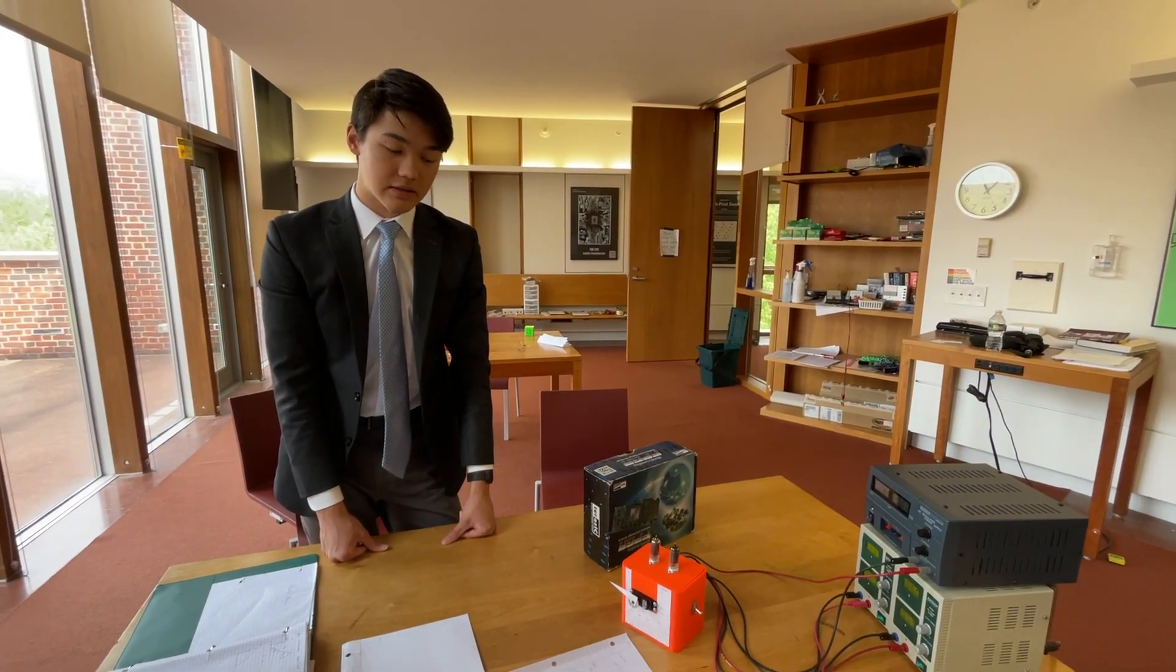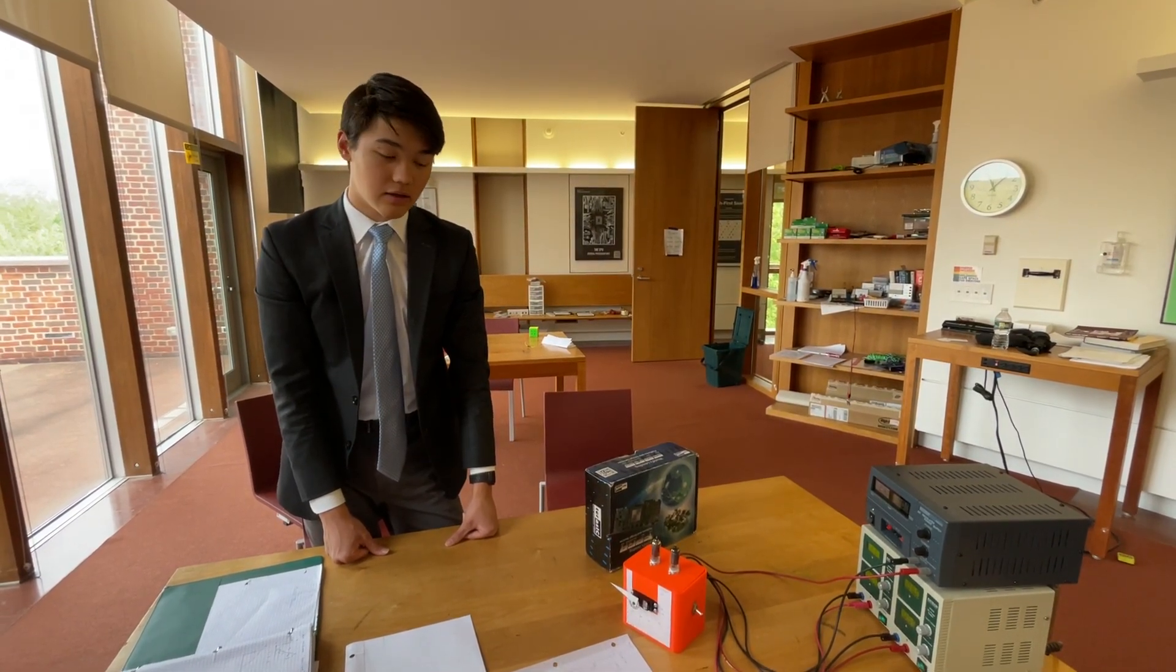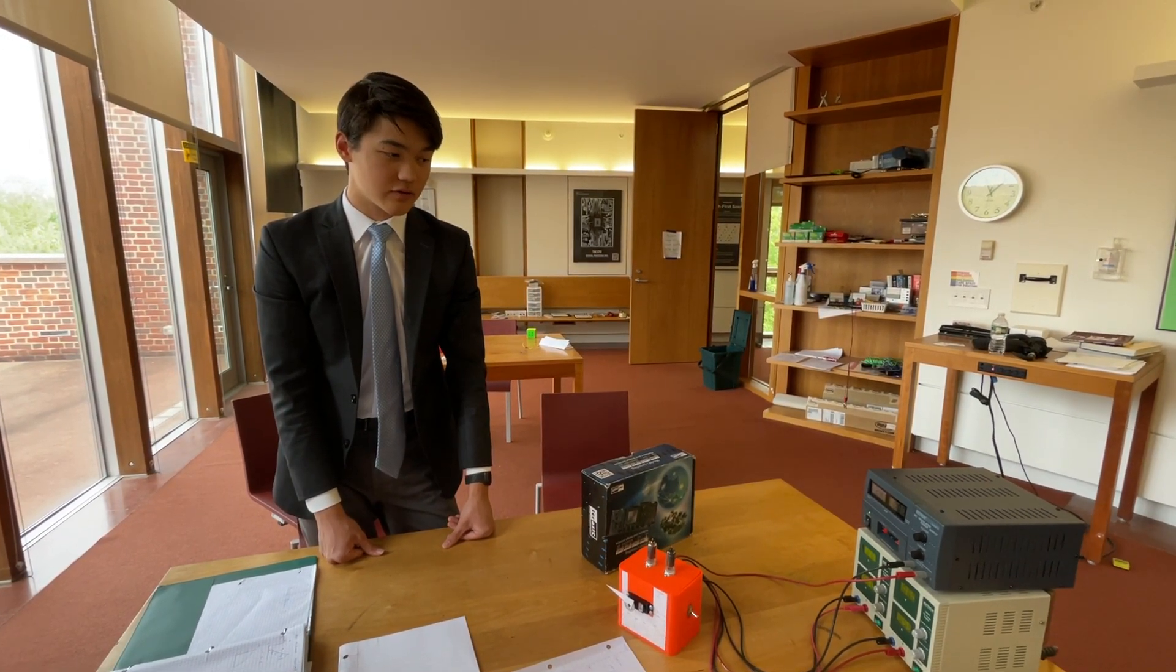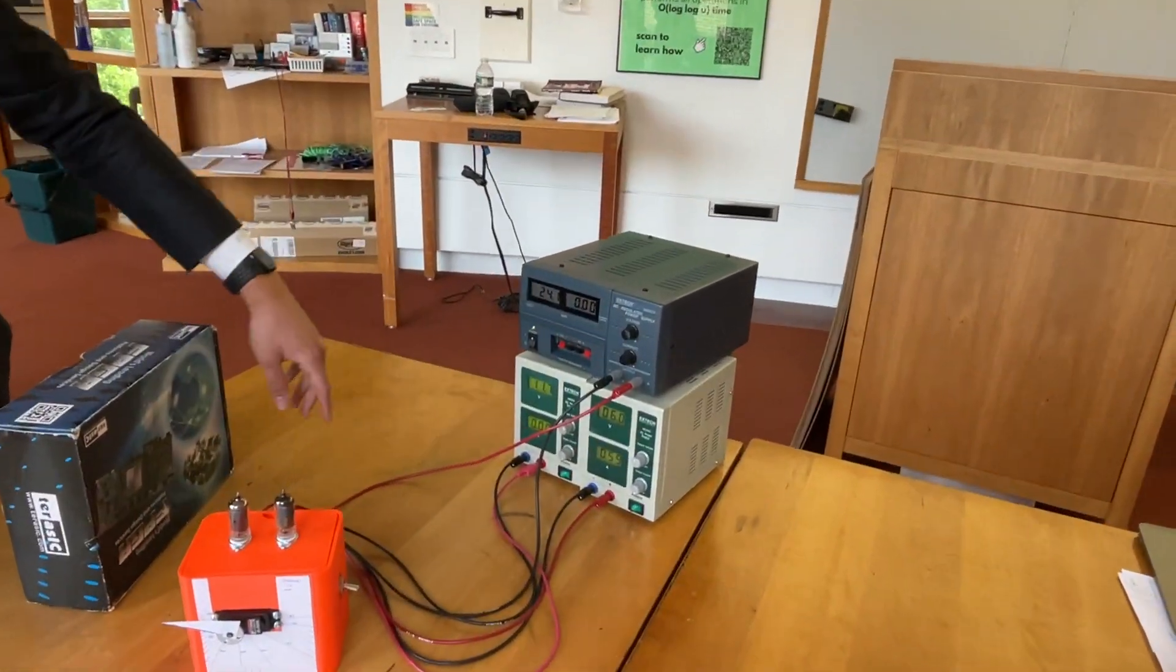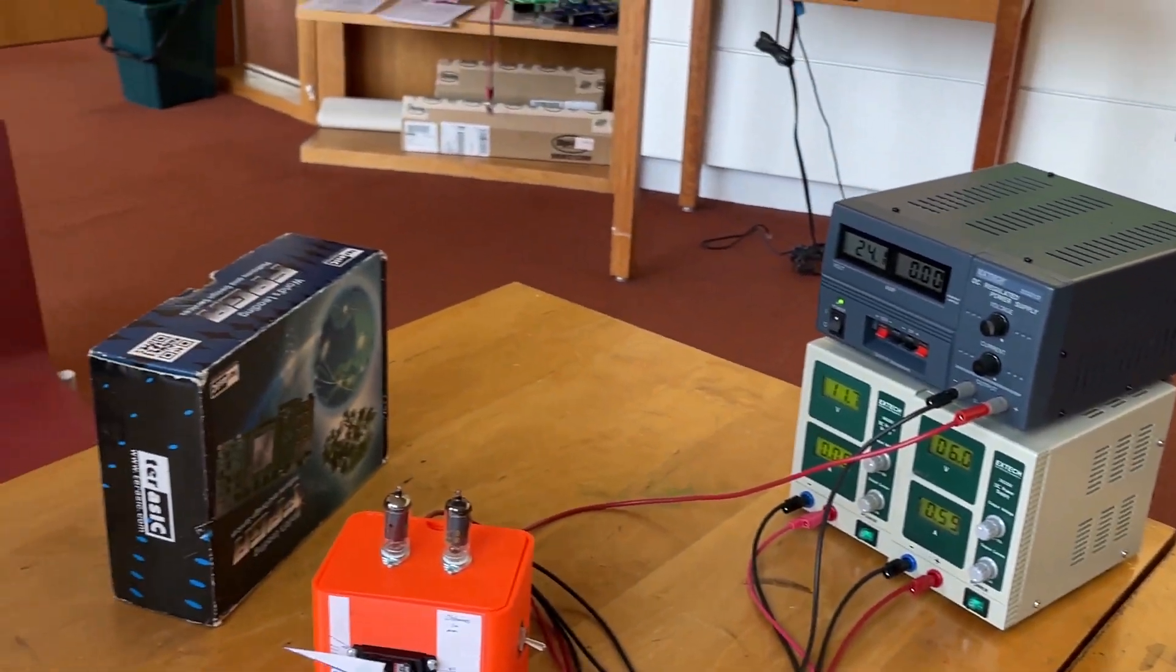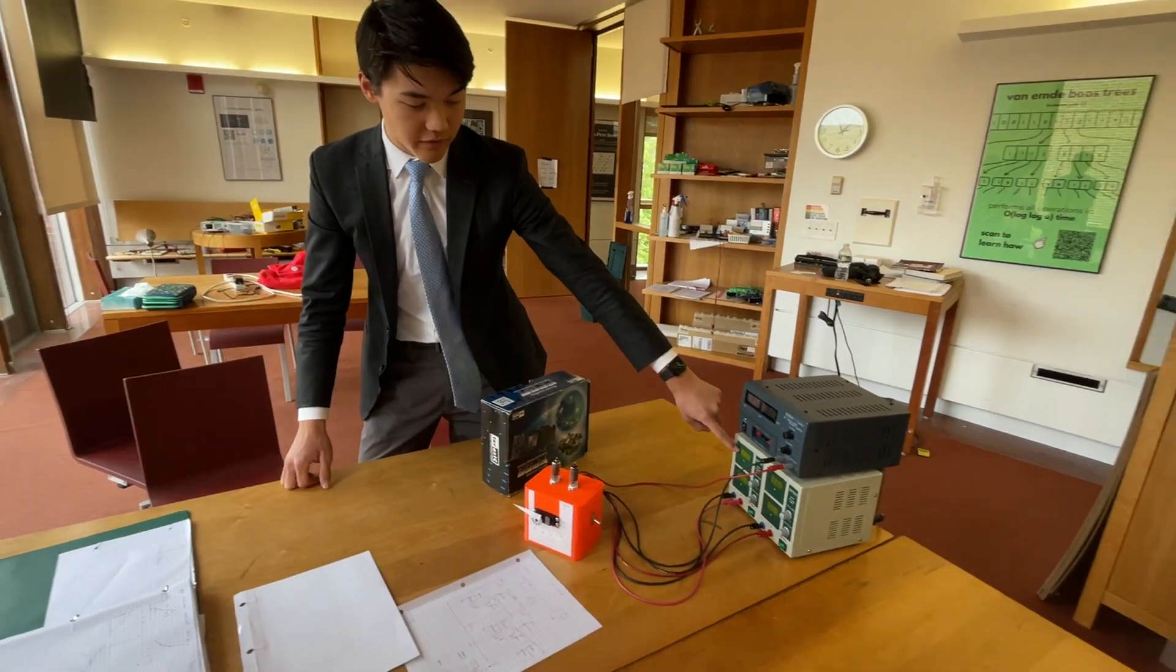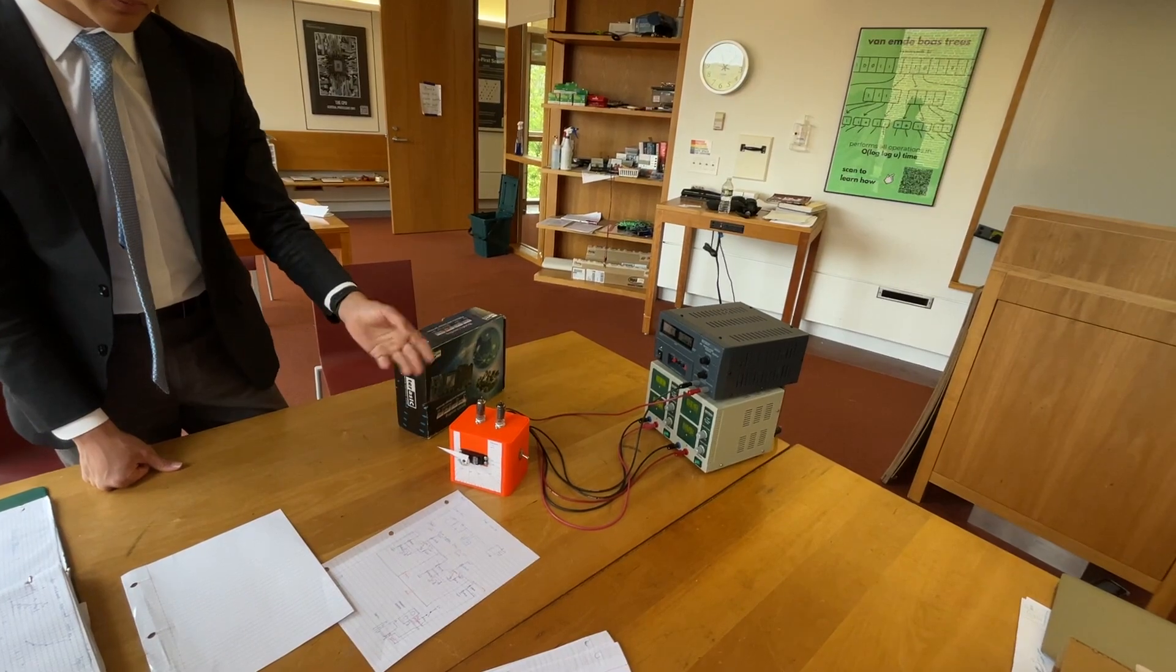One big idea is that low and high is no longer 5 and 0 volts. Low voltage is now 6 volts and high voltage is 24 volts. That's also why I have 24 volts and 6 volts as two of the power supplies. And another thing is you need negative voltage as part. So this says 12 volts. It's actually supplying minus 12 volts to the project.